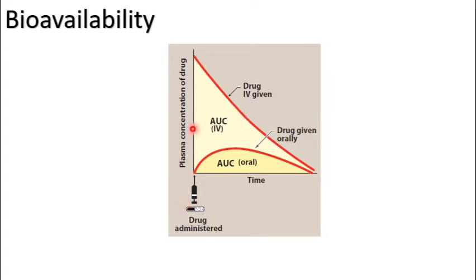Here we can see a graph between time and the plasma concentration of the drug. The curve shown is for a drug given through the oral route. As you can see, the drug concentration in plasma increases slowly because there is a time for absorption, then the drug reaches a maximum concentration in the blood.